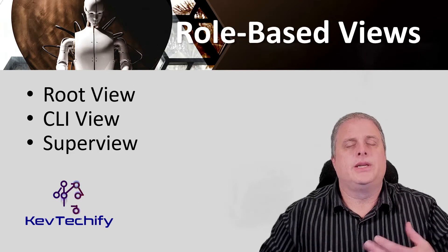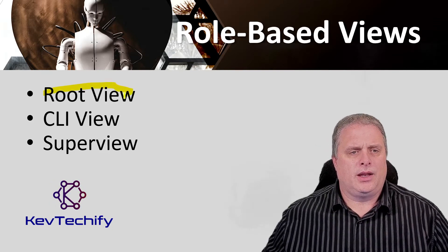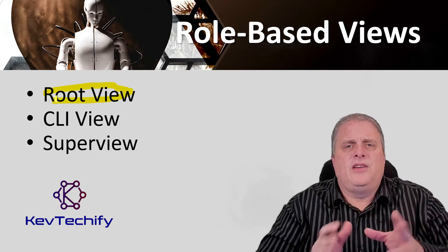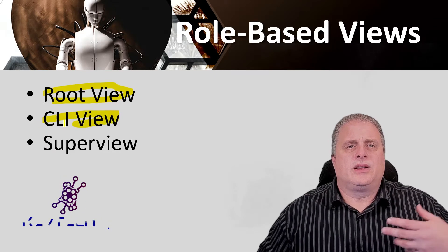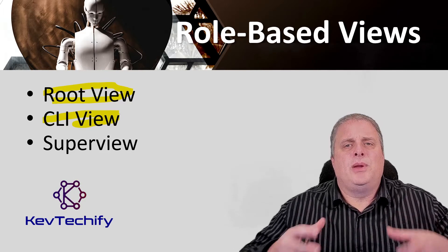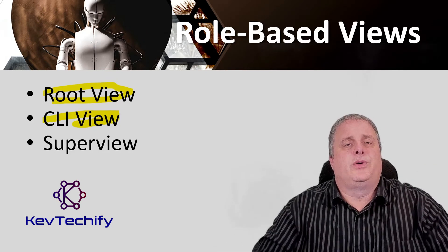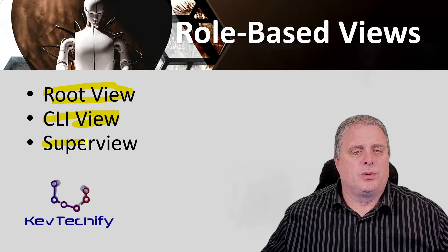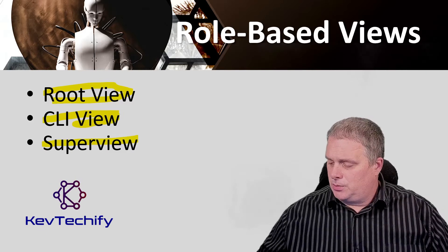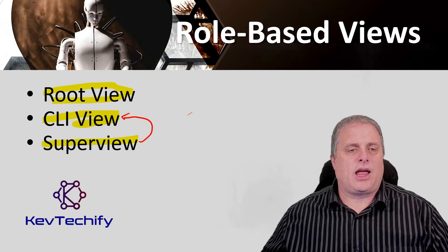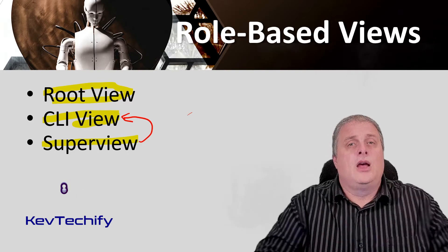Role-based CLI provides three types of views that dictate which commands are available. The first is the root view — to configure any view for the system, the administrator must be in the root view. Then we have the CLI view: a specific set of commands can be bundled into a CLI view, so you put the commands you want to give a certain user into that view and assign it to that user. And then finally, we have a super view. A super view consists of one or more CLI views.